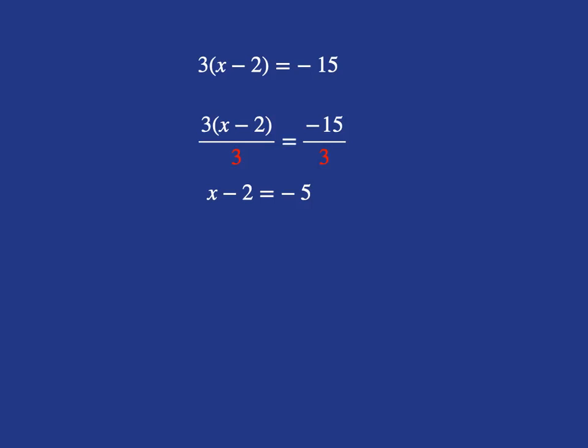We still want to get x just on itself on the left. So what we're going to need to do is add 2, and obviously we must do that to the right-hand side as well. And then we'll get to our solution that x is equal to negative 5 plus 2, which will be negative 3.